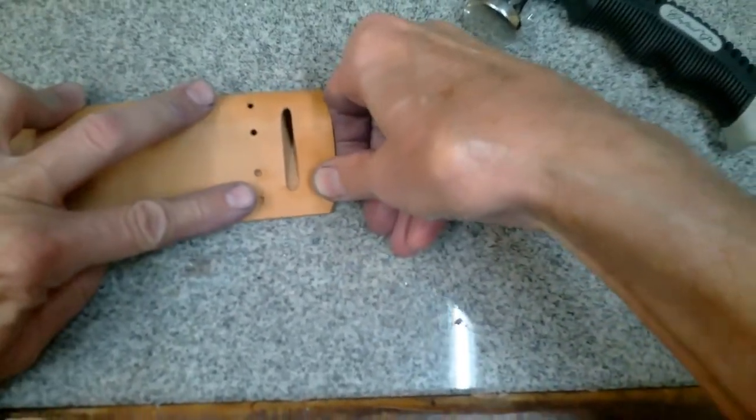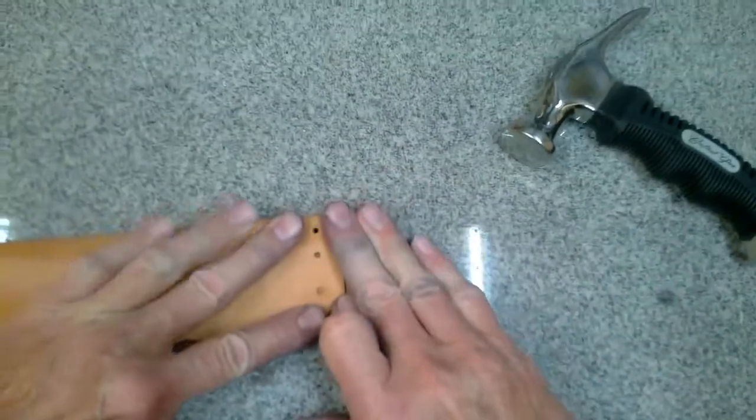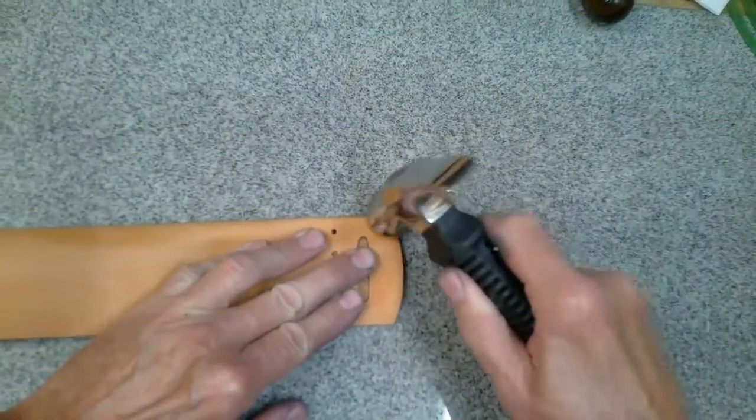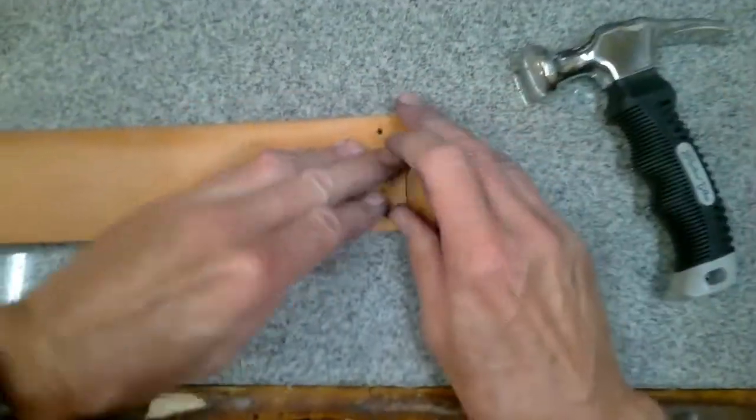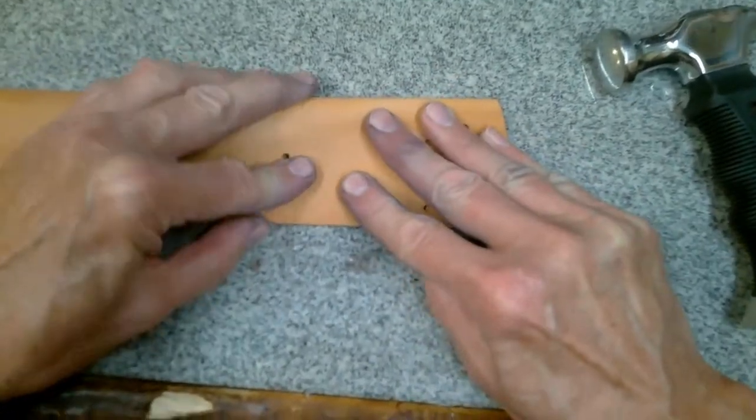After about an hour, the leather is ready to take a good fold. Carefully fold the belt blank over and align the edges perfectly, one small section at a time.